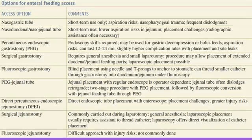The access options for enteral feeding include a nasogastric tube, naso-duodenal tube, or naso-jejunal tube, used only for short-term feeding — not beyond 30 days. There is always a risk of aspiration because the esophageal sphincter is splinted open. Nasopharyngeal trauma is another concern, so softer tubes are used. Tubes can be dislodged or pulled out by uncooperative or agitated patients.